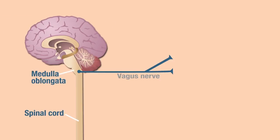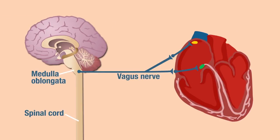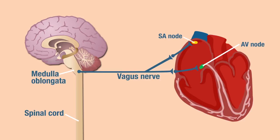The vagus nerve innervates the SA and AV nodes of the heart. Here they are located — the SA node and the AV node. Remember, the vagus nerve is a parasympathetic nerve.